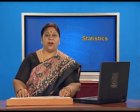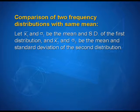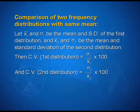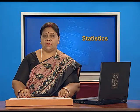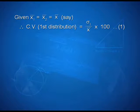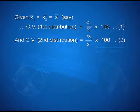Now, let us discuss about the comparison of two frequency distributions with same mean. Let x1 bar and sigma 1 be the mean and standard deviation of the first distribution and x2 bar and sigma 2 be the mean and standard deviation of the second distribution. Then the CV in the first distribution can be expressed as sigma 1 upon x1 bar into 100 and coefficient of variation for second distribution is equal to sigma 2 upon x2 bar into 100. Given x1 bar is equal to x2 bar that is equal to x bar say. Therefore, CV for first distribution becomes sigma 1 upon x bar into 100, and CV for second distribution becomes sigma 2 upon x bar into 100.